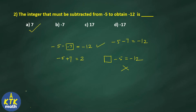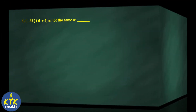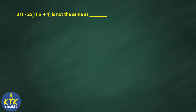Question number 3: minus 25 multiplied by the product of 6 plus 4 is not the same as which option? First, solve: minus 25 multiplied by (6 plus 4) equals minus 25 multiplied by 10, which gives minus 250. Now we check the options.